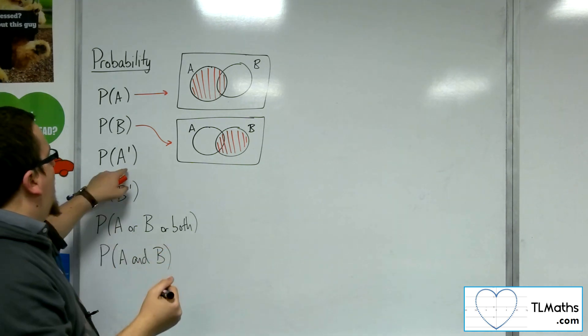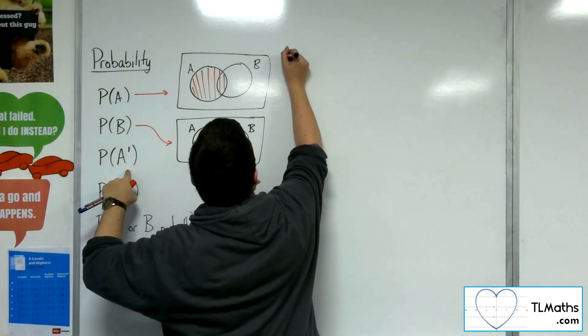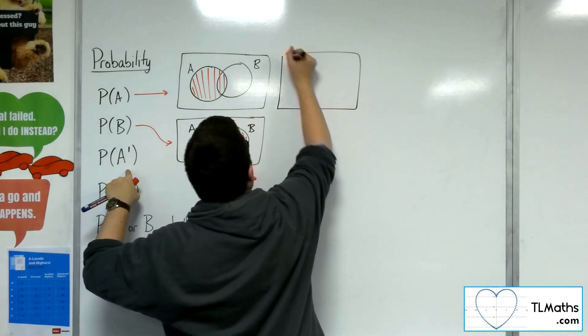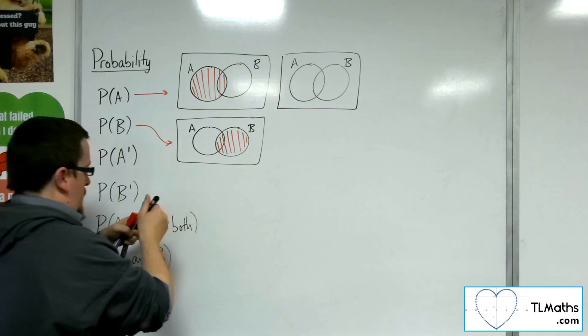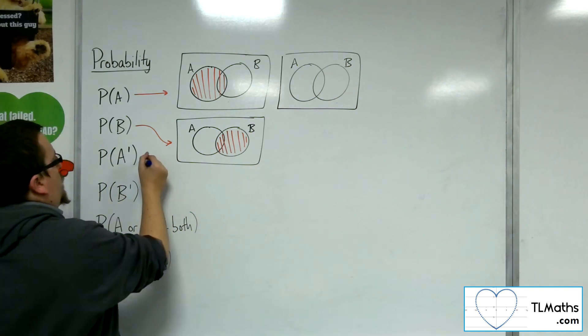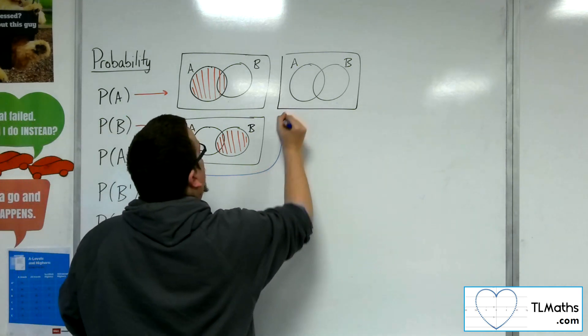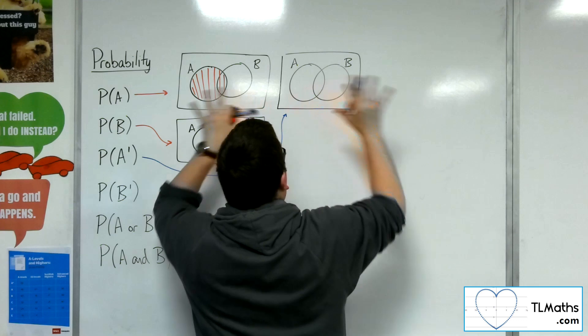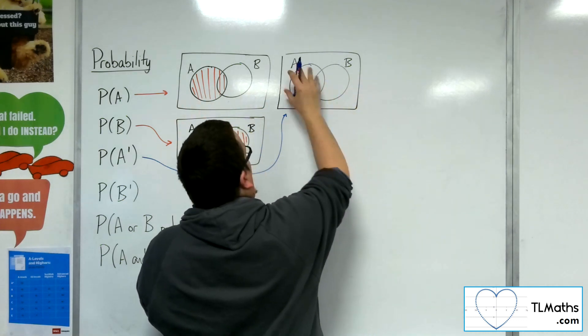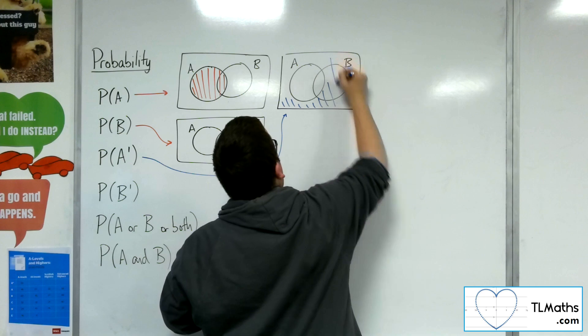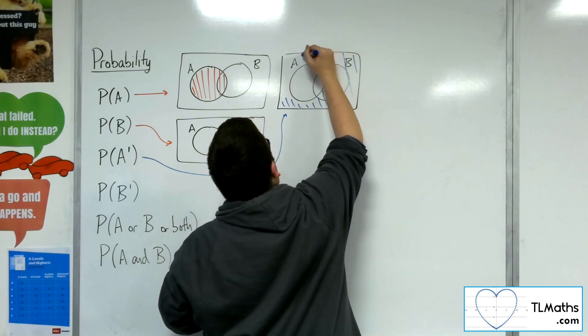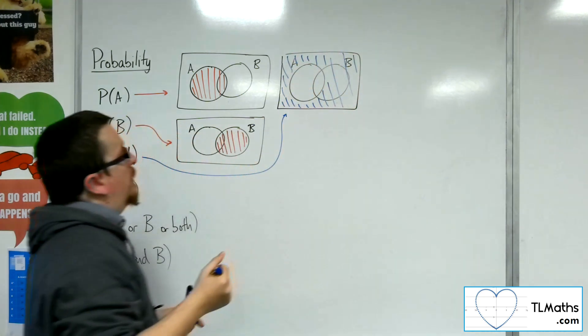If I'm looking at not A, there's A, there's B. So let's do not A. Then not A is anything outside of the circle of A, anything that is outside of it.